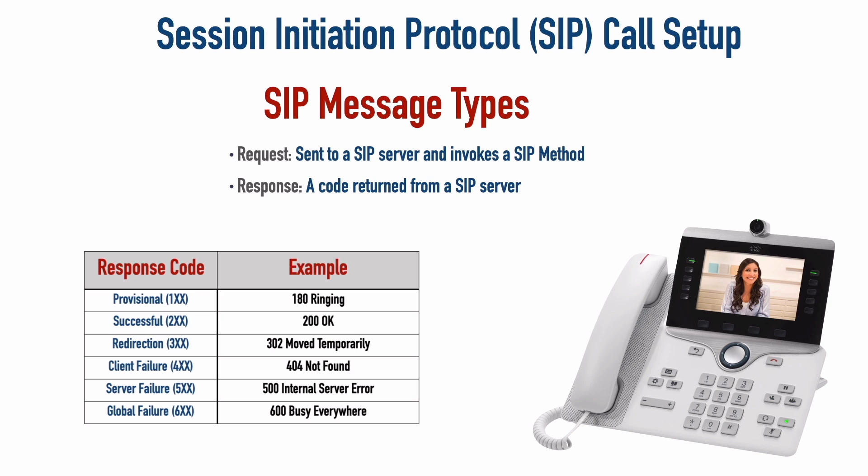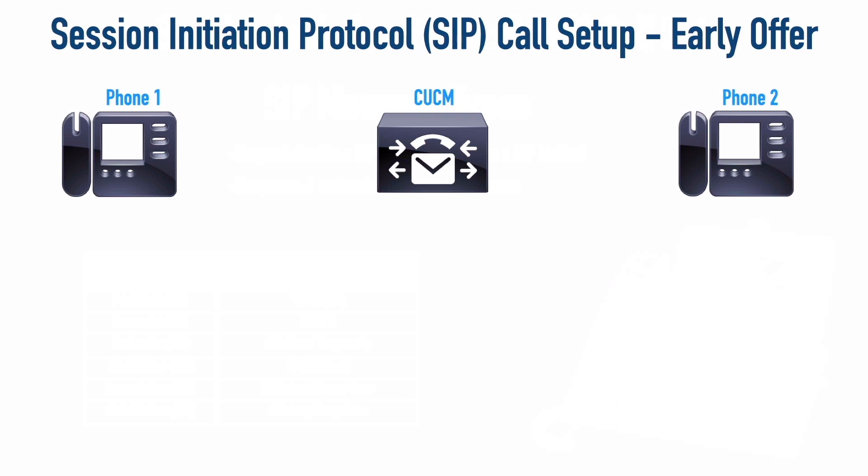Now that we understand the different messages and response codes used during a SIP call, let's look at SIP call setup — the main purpose of this video. There are two primary types of SIP calls: early offer and delayed offer. With early offer, let's say phone one wants to call phone two — it begins with an INVITE message. The key distinction: with early offer, SDP information is contained inside the INVITE message. SDP stands for Session Description Protocol, a protocol used to negotiate the parameters for the call, such as phone one's IP address, a list of supported codecs, and the RTP port numbers it wants to use.